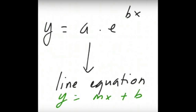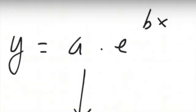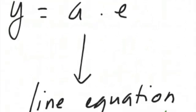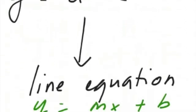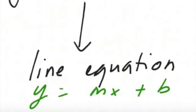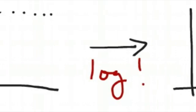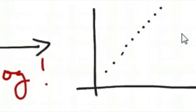So our goal is to convert the exponential function form, which we know is y equals a times e to the power of bx, to a linear function form, which is y equals mx plus b. Graphically, we want to take the exponential function plot and make it look like a linear plot or a line.